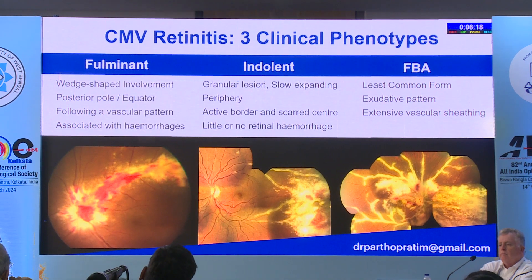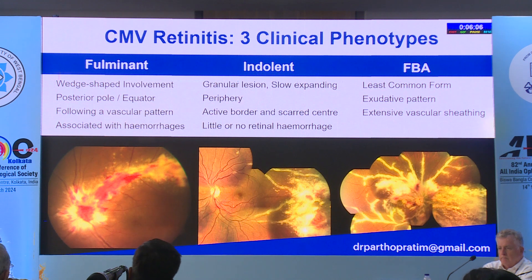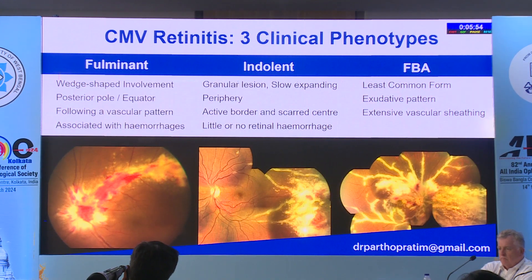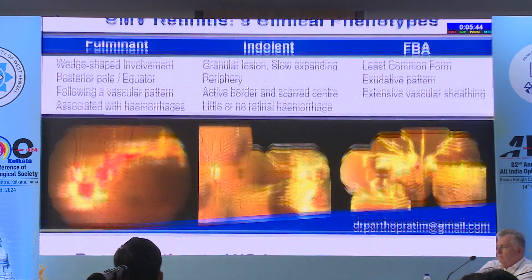There are broadly three varieties of CMV retinitis. Most are familiar with the fulminant 'pizza pie' retinopathy. The indolent granular variety is often seen in the periphery and may not show hemorrhage — so don't miss it. Remember that the granular variety of CMV is a little different from the conventional variety. Frosted branch angiitis can also be seen in CMV retinitis and requires investigations and imaging.